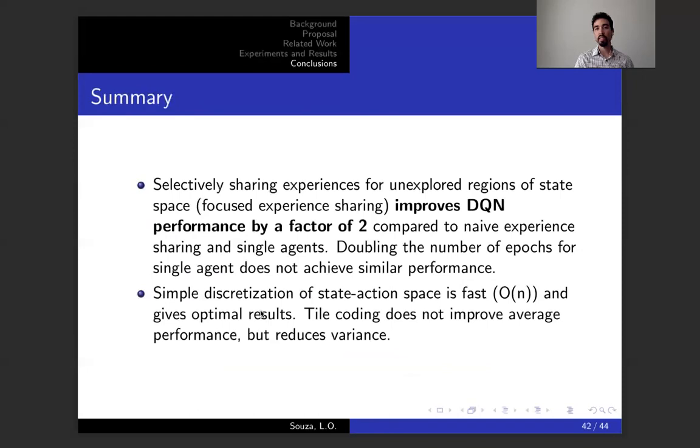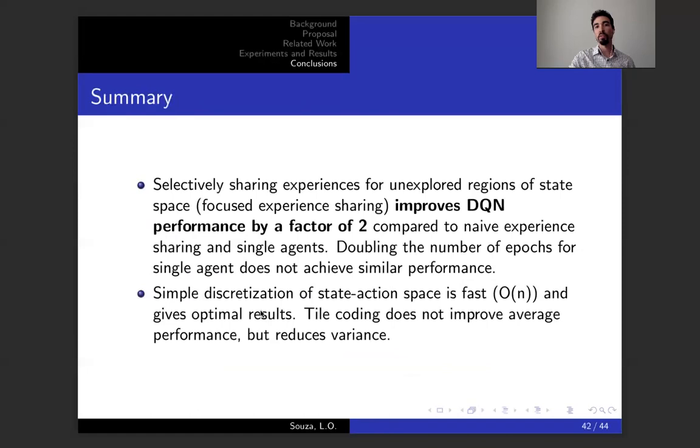We also concluded that simple discretization of state action space is fast. It runs in O of N, it's just a mask over the tensor, and it gives optimal results. Using tile coding doesn't improve average performance, but just reduces variance. If the focus is on efficiency, simple discretization would work. For future work, we're looking at extending this to larger number of agents. We ran some preliminary experiments on it. Adapt this to Markov games formulation, which is common in multi-agent systems. Here we're just using independent learners. We also want to combine with methods to handle heterogeneous agents or heterogeneous environments, so it can be more easily extended to larger class of problems.